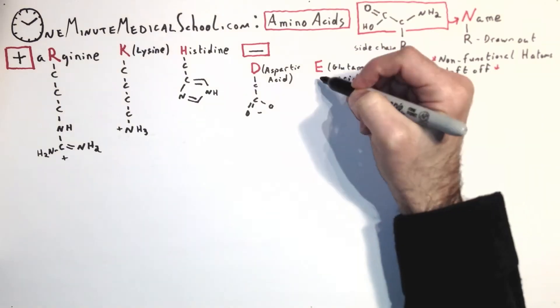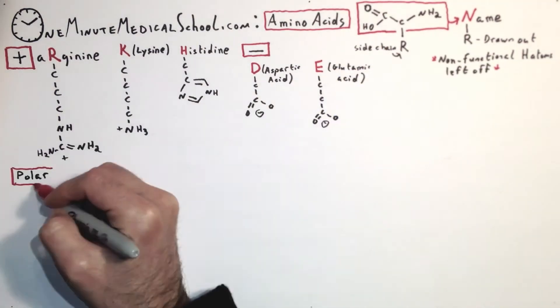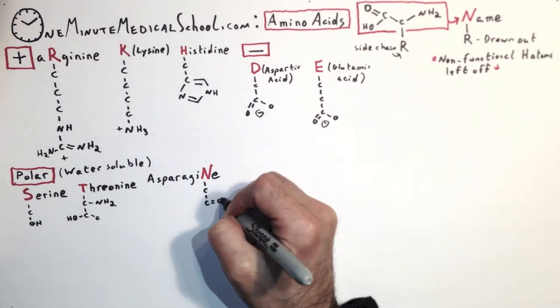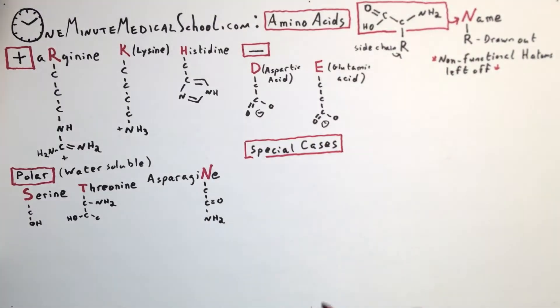Aspartic acid and glutamic acid have oxygen near the ends, and that's what makes them negatively charged. The polar groups have hydroxyl groups near the end. Asparagine has an amino group.